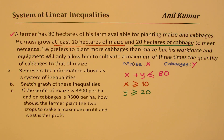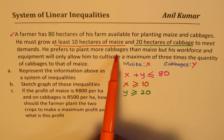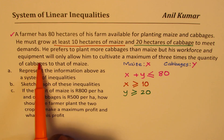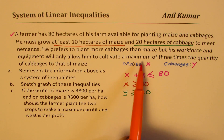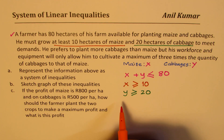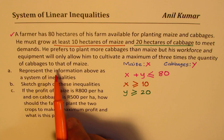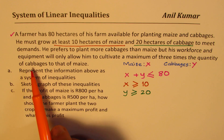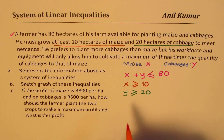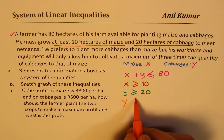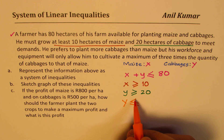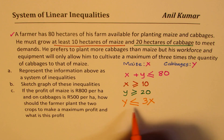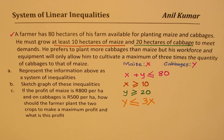The last constraint: he prefers more cabbages than maize, and his workforce allows a maximum of three times the quantity of cabbages compared to maize. So cabbages can be at most three times maize — Y ≤ 3X. That gives us our complete system of inequalities.